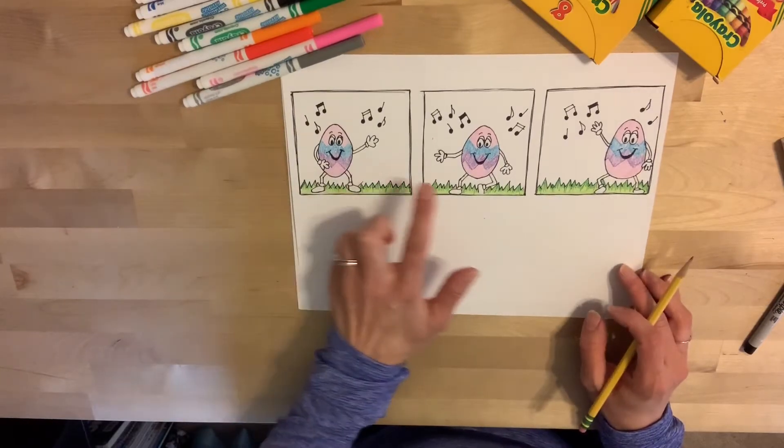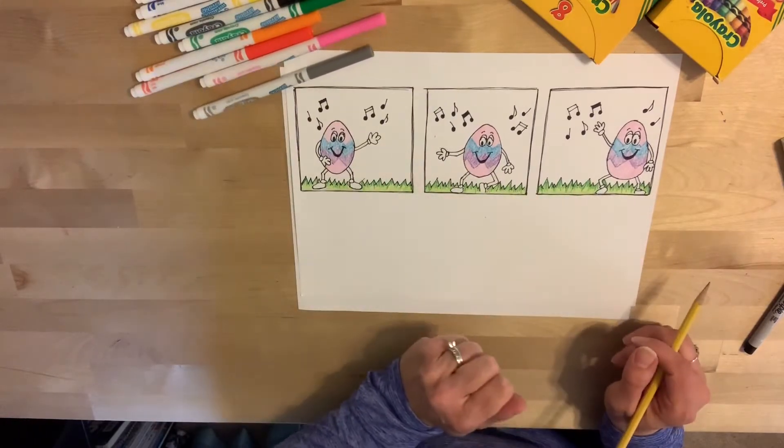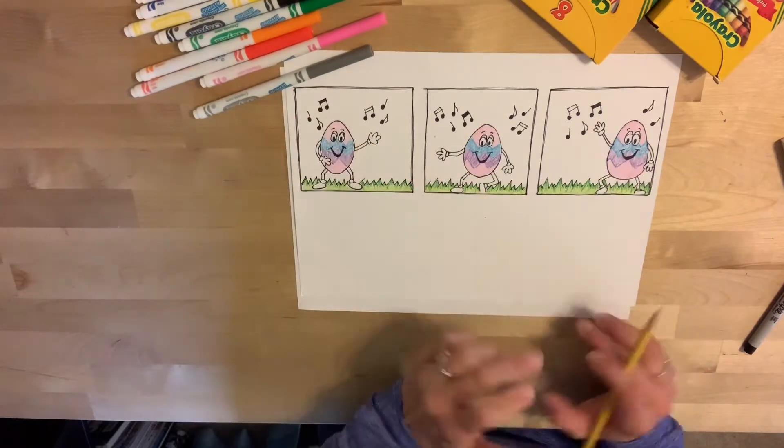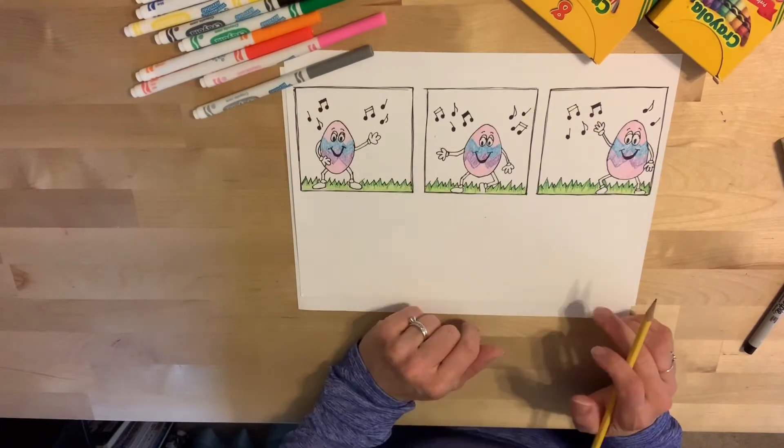Comic strips are normally broken up into blocks like you can see here with my dancing egg. So the first thing you want to do is make your three blocks because we're just going to do one with three blocks. Start pretty simple this week.